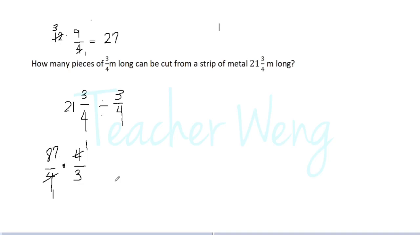And we have here eighty-seven over three. Eighty-seven is divisible by three also. So eighty-seven divided by three is twenty-nine. So twenty-nine pieces.